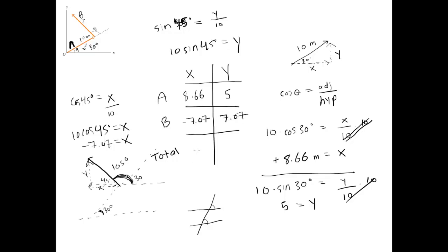To get the totals, simply add down the columns. Taking the x components and adding them together: 8.66 plus negative 7.07 gives approximately 1.6 for the total x component. For the total y component, 5 plus 7.07 gives approximately 12.1.